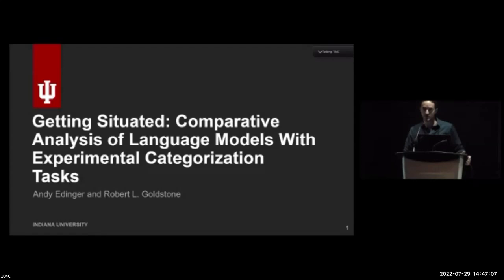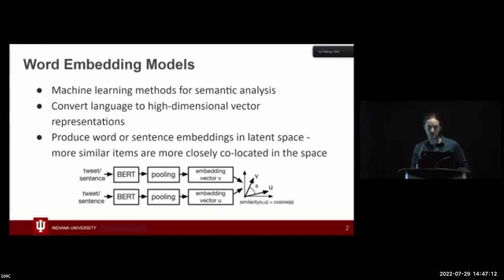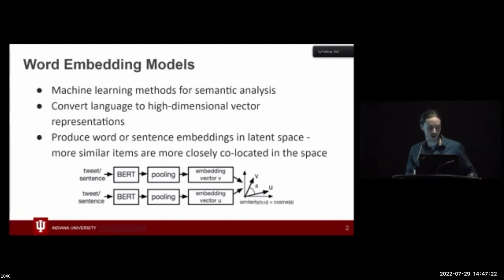For a quick overview on some of the models we're looking at: the word embedding models are generally machine learning methods for semantic analysis that convert language to high-dimensional vector representations. You can think of different words or sentences as points in space, where the distance between these points corresponds to the similarity of those language samples. There are about a million different approaches to carry this out.